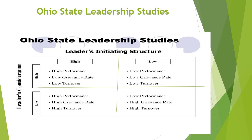The fourth quadrant is where both are low — low people consideration and low initiating structure. Here, low performance and low production result. Grievances rate is high, meaning people are very dissatisfied, conflicts are frequent, and turnover is high because people don't see a long-term future in this type of organization and will leave.